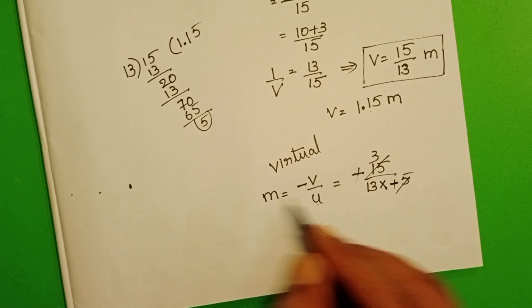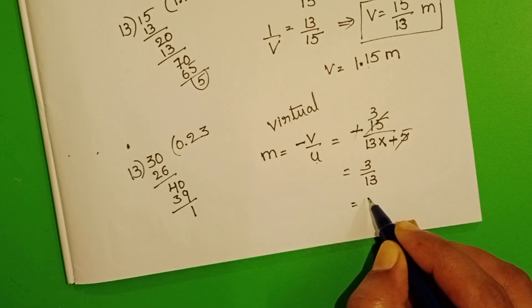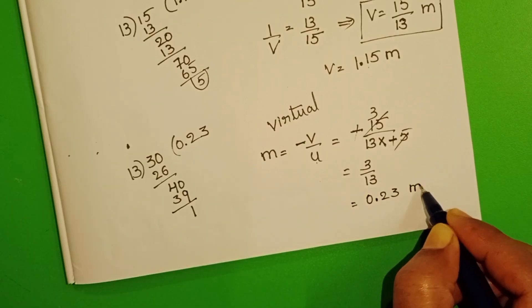3 by 13. Converting to decimal form, magnification equals 0.23.